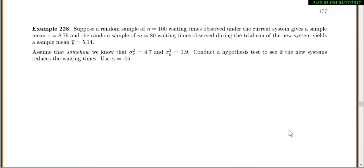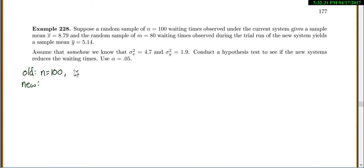Let's try an example. A random sample of 100 waiting times under the current system gives a sample mean of 8.79, and a random sample of 80 waiting times on the new system gives a sample mean of 5.14. Write down your information: old system — N = 100, X-bar = 8.79; new system — M = 80, Y-bar = 5.14. It's very important to write everything down so it's easier to plug in.